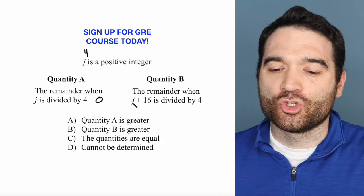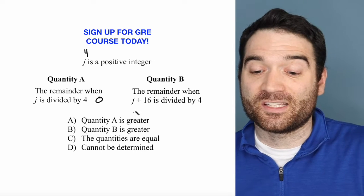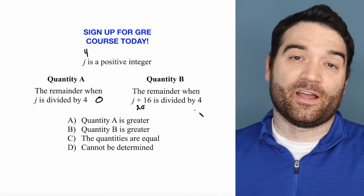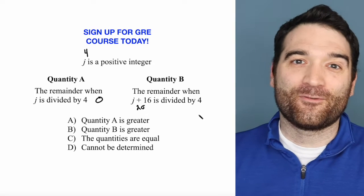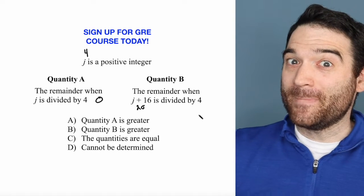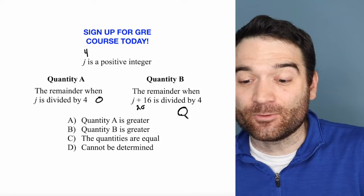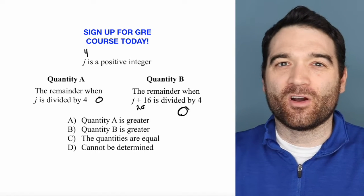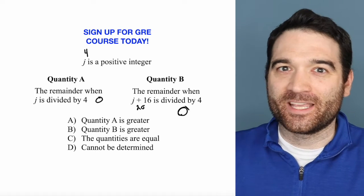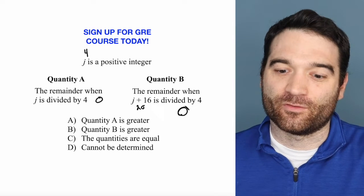Okay, and so then what's the remainder when J plus 16, so that's 4 plus 16, or 20 is divided by 4? Well, 20 divided by 4 is 5, but the remainder, what's left over after that division, is again 0, right? Pretend you have 20 cards and 4 people. Everybody gets the same amount of cards, and there's none left over. It's 0.